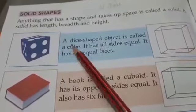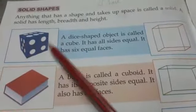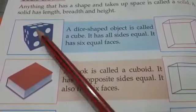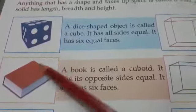A dice-shaped object is called a cube. Ye dice shape object isko kyun bolte hain? Iski all sides equal hoti hain and six equal sides hoti hain.